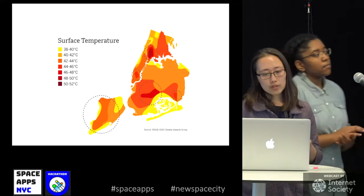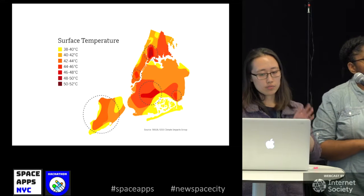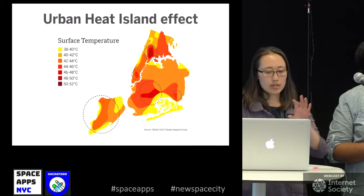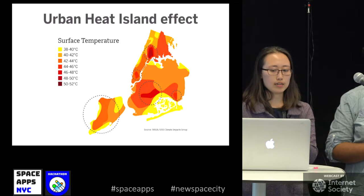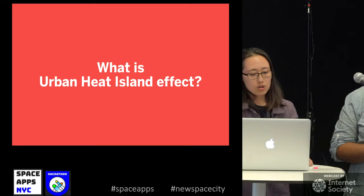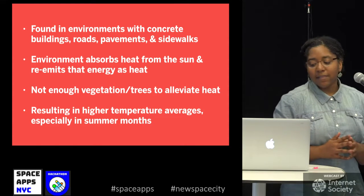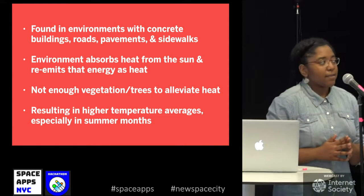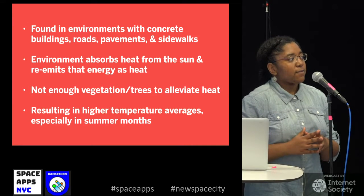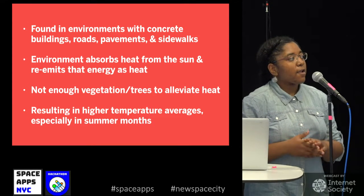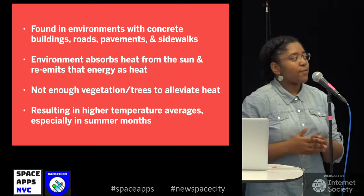When we look at data from Landsat, we can see there are pockets of heat in these neighborhoods — these are called the urban heat island effect. So what is the urban heat island effect exactly? It's found in environments with a lot of concrete, asphalt, roads, and pavements.